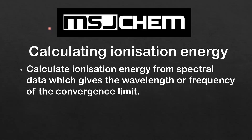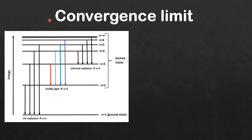This is MSJChem and in this video I'm going to look at calculating ionization energy, which involves calculating ionization energy from spectral data that gives the wavelength or frequency of the convergence limit. I'm going to start by looking at the convergence limit, but before that we'll look at the hydrogen emission spectrum.